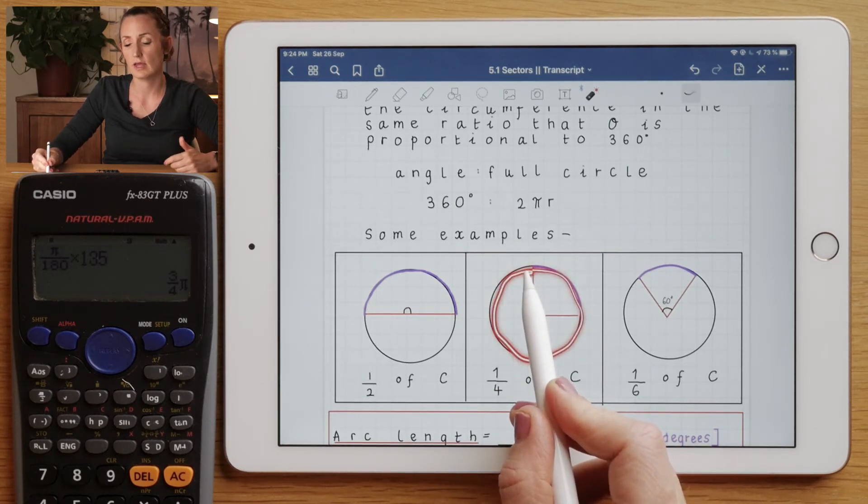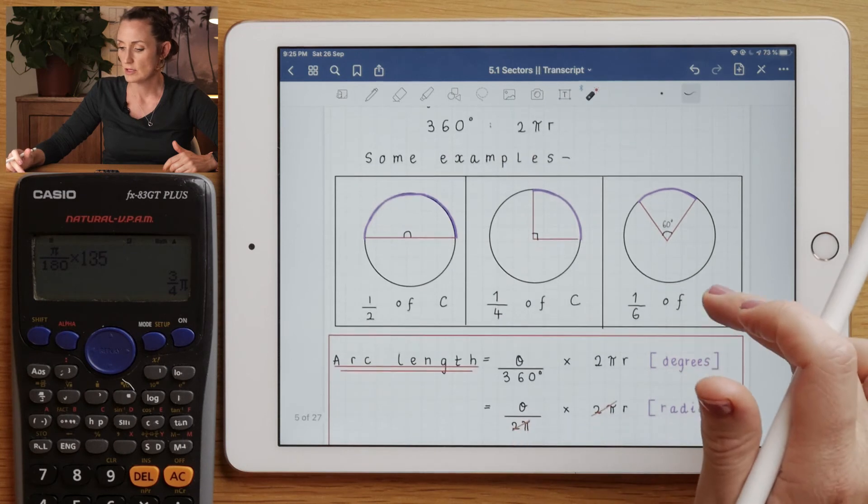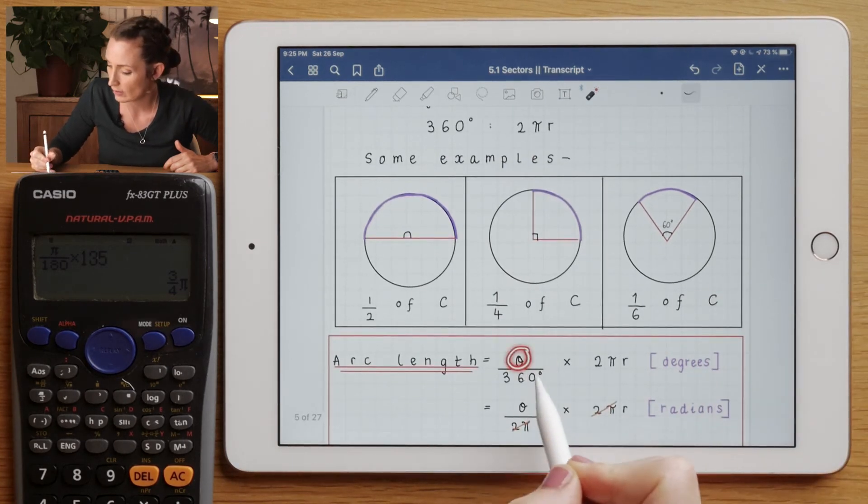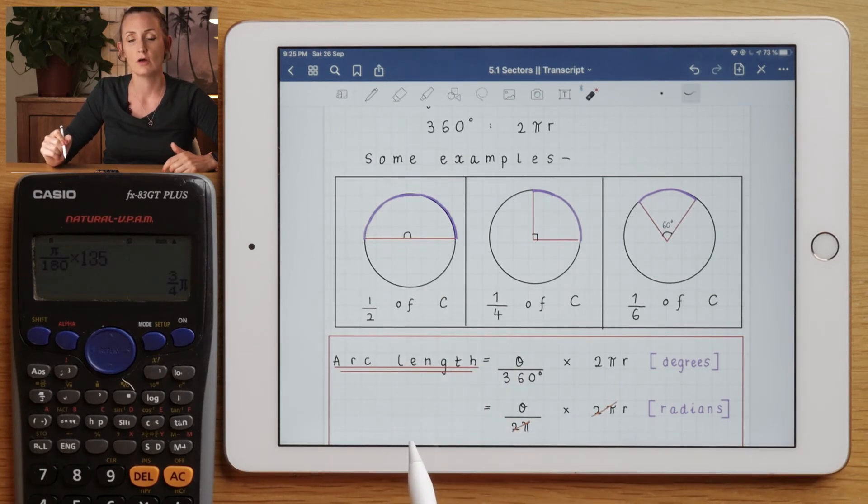90° out of 360° will cancel down to a quarter. And here, 60° out of 360° would cancel down to a sixth. So what we can do is take our angle and divide it by 360°. That will give us what fraction of the circumference that we have.